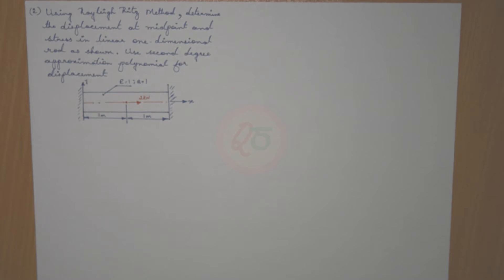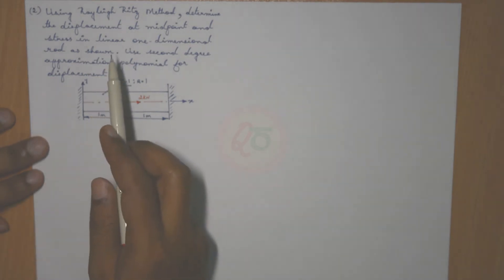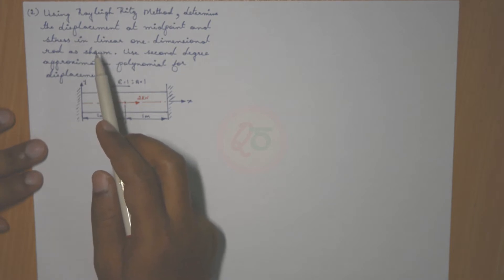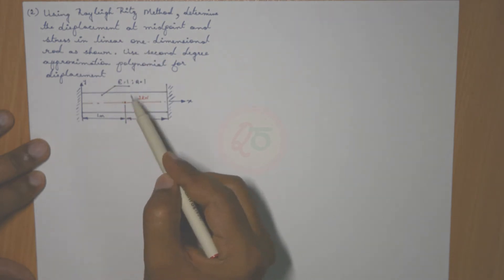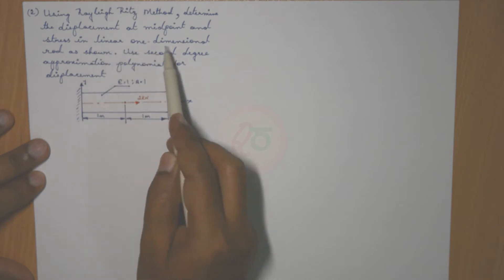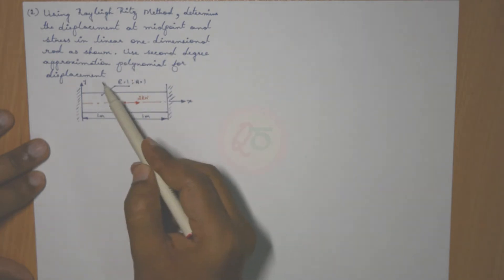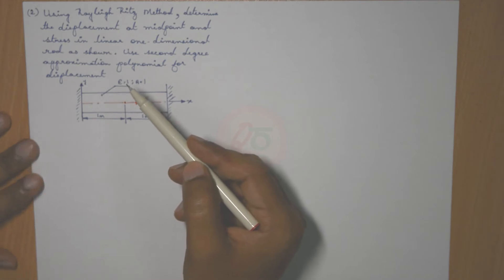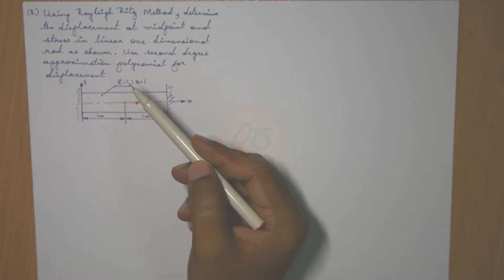Hello, welcome to the second numerical on Rayleigh-Ritz method. The problem statement is as follows: using the Rayleigh-Ritz method, determine the displacement at the midpoint and stress in a linear one-dimensional rod as shown. This is the bar. Use a second degree approximation polynomial for displacement. We did not have to worry about the type of displacement function or the degree of the polynomial — both have been given in the question itself.